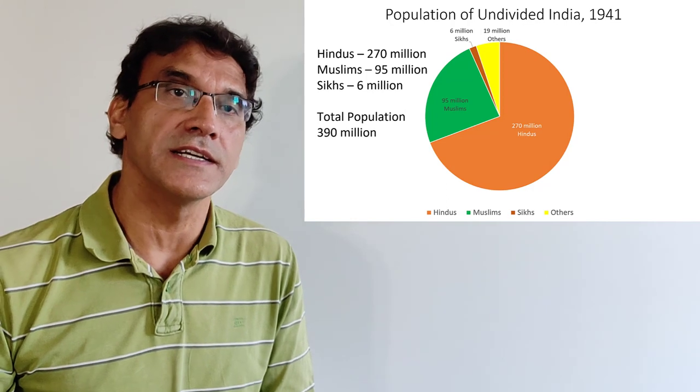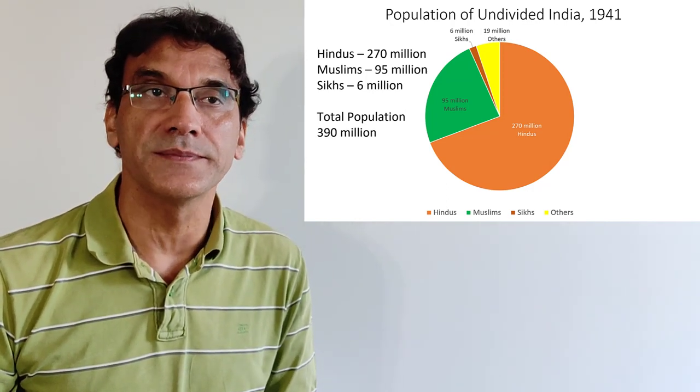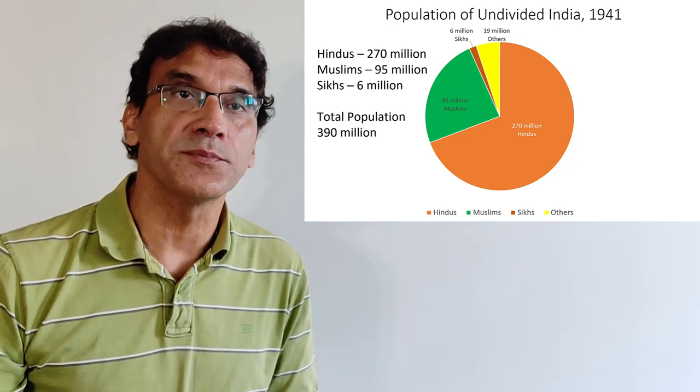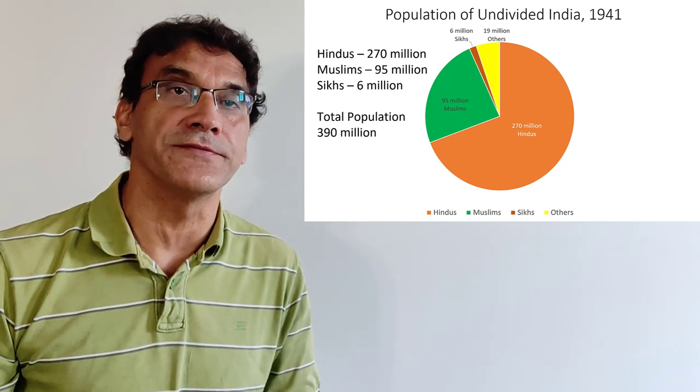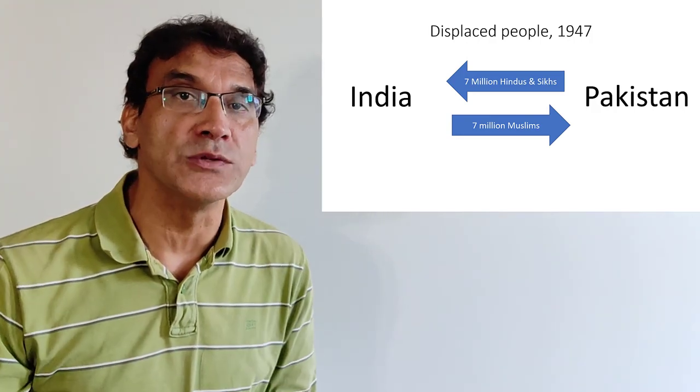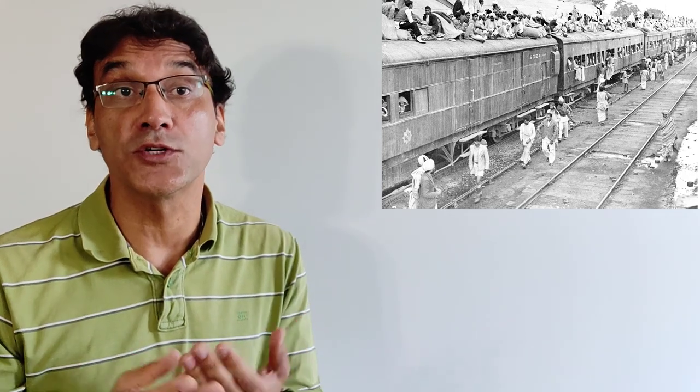Here are some numbers and statistics to help grasp the immensity of the tragedy. Please keep in mind these are estimates, as census records were imprecise. The population of undivided India according to the 1941 census was 390 million, of which 95 million were Muslims, 6 million were Sikhs, and about 270 million were Hindus. Muslims were more or less equally distributed across the future territories. As a result of partition, around 15 million people were displaced — approximately 7.2 million Muslims moved from India to Pakistan, and almost the same number of Hindus and Sikhs moved from Pakistan to India. 2.2 million were missing or unaccounted for, and more than a million people were killed in the partition violence.